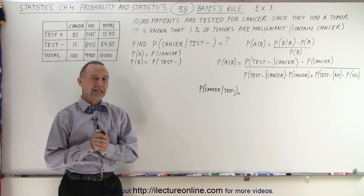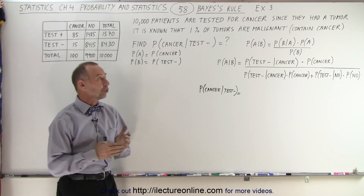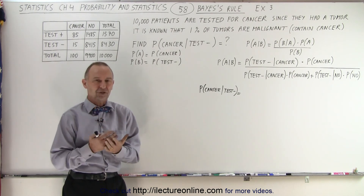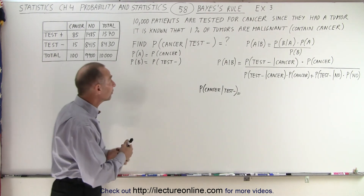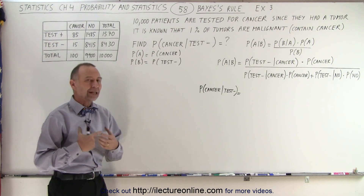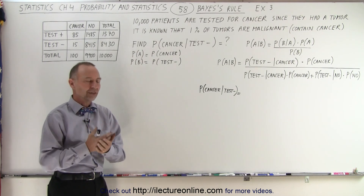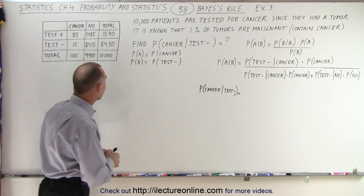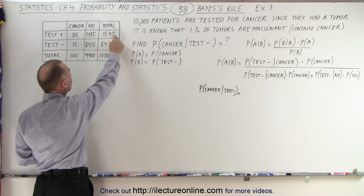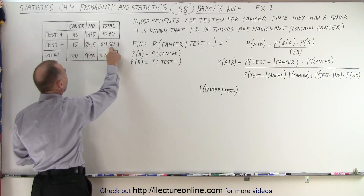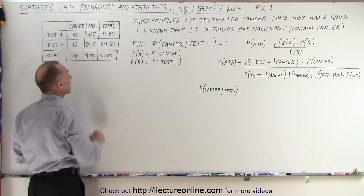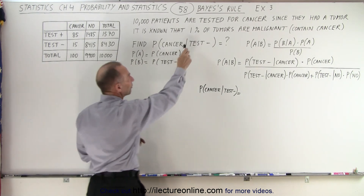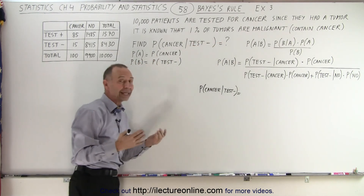Welcome to our lecture online. In the previous video, we used Bayes' rule to figure out a medical test problem. The problem was that there were 10,000 patients that had a tumor. There was a test conducted on each of those 10,000 patients, and of those 10,000 patients, there were 1,570 that tested positive and 8,430 that tested negative. But we knew, from previous experience, that 1% of these types of tumors are malignant.